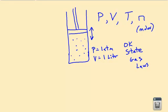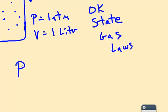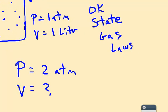Let's say this particular gas to start with is at a pressure of 1 atmosphere and a volume of 1 liter. And we take this and we squash it down, so we're going to increase the pressure all the way up to 2 atmospheres.